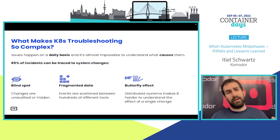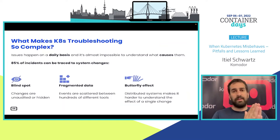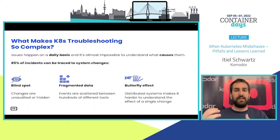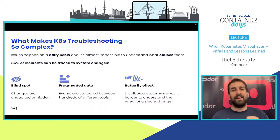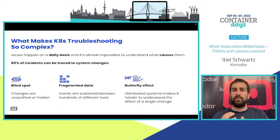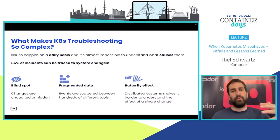What makes Kubernetes troubleshooting so complex? First, Kubernetes is like a living organism — it keeps changing. Version changes, node changes, pod changes, everything keeps changing. But most people are running blind, meaning they don't really know what happened inside their cluster: what version changed, what kubectl version changed, or who pushed what, when and why.